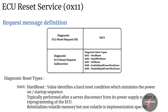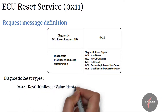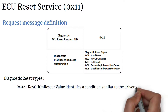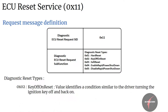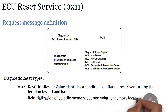The hard reset operation shall lead to reinitialization of volatile memory locations; non-volatile memory location initialization is implementation specific. Next, value two maps to key off/on reset. This value identifies a condition similar to the driver turning the ignition key off and back on.